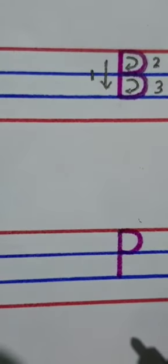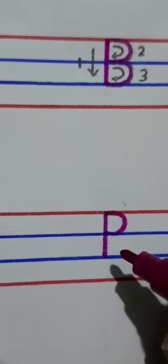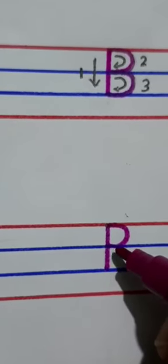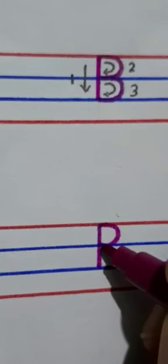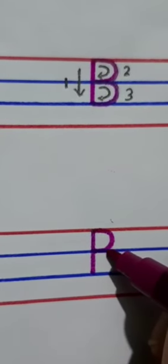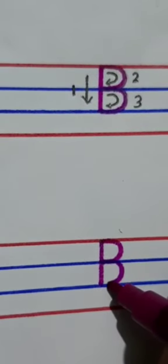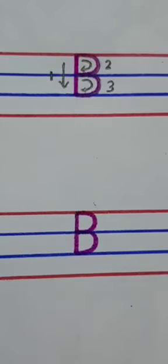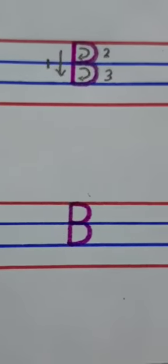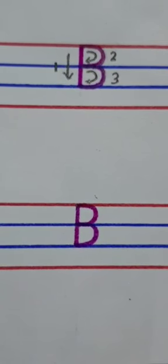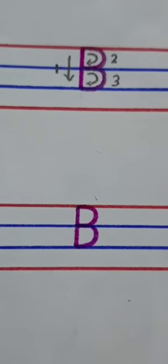In third step again we are going to make one right curve. We will put our pencil on the second line, move the pencil down towards the right side making a slight curve and touch the third line which is blue in color. So this is how we write letter B.